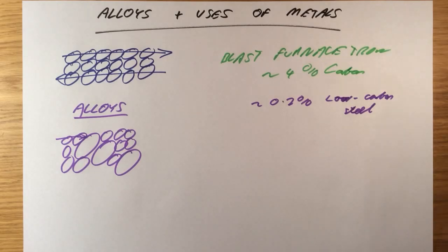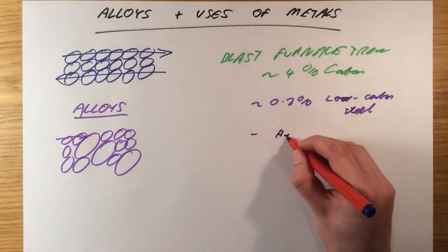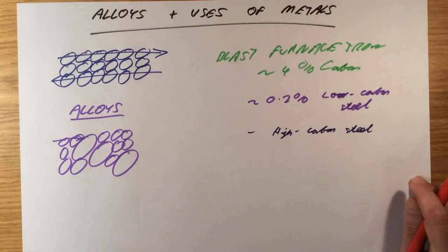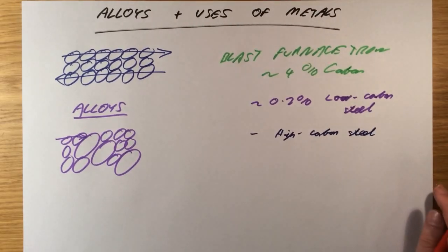If you have high carbon steel, this is going to be much much stronger and also more brittle, which means it can shatter easily. I can also mix the pure iron with different metals, in which case I can form other types of steel.